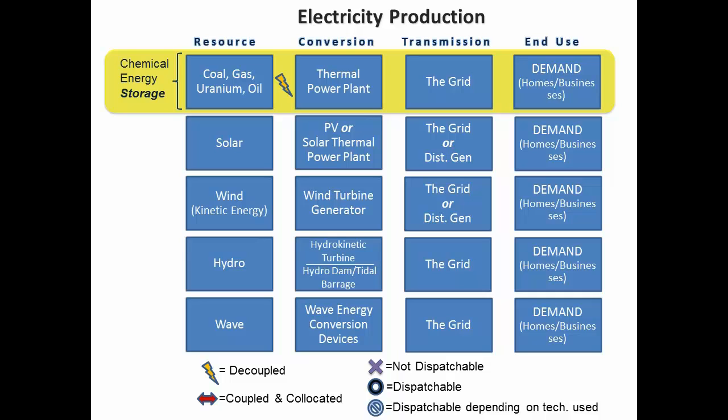Also, the resource is decoupled from the conversion process. You could burn it where you were pulling it out of the ground, but in most cases you're transporting it. When I lived in Georgia they shipped in their coal from Wyoming, and think about Alaska or Hawaii or other island nations — they ship in a lot of diesel fuel and other resources to meet their energy demands for heating and electricity. So they're decoupled by nature. The energy conversion process is also dispatchable to the grid — imagine a knob you can turn up and down. We'll talk about peaking plants versus baseload plants later, because you can turn some of these plants up and down with varying levels of resistance.